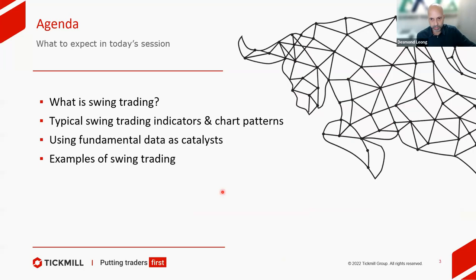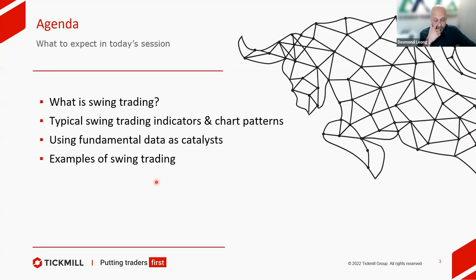Today's agenda: we'll start with what is swing trading, then look at typical swing trading indicators and chart patterns — the more common ones used to identify momentum, reversals, and breakouts. We'll also look at fundamental data and which data has been acting as a strong catalyst in the current market environment. Finally, we'll conclude with examples of swing trading using the dollar index, since once we know how the dollar index is trading, it translates naturally to all other currency pairs — if the dollar index is rising, pairs like euro and pound fall, while dollar-yen and dollar-franc rise.